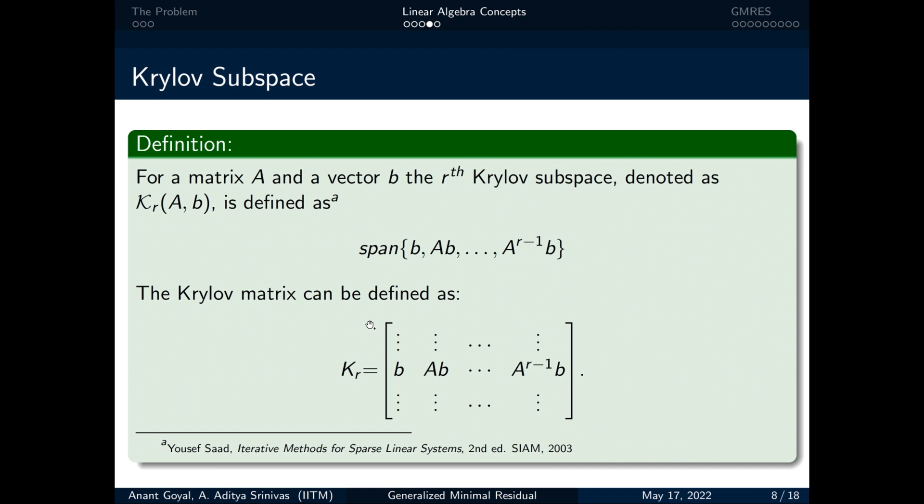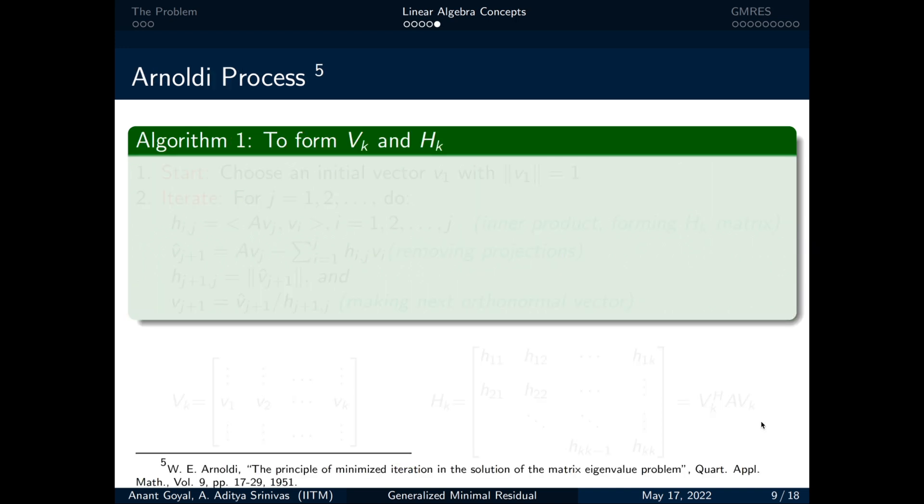This subspace is very popular for obtaining the solution to iterative methods such as GMRES, Arnoldi, conjugate gradient, etc. Now, we will describe the Arnoldi process which is the heart of GMRES method.